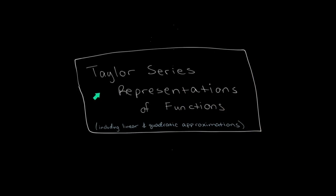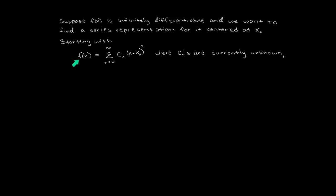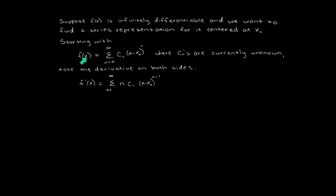The main topic for this video is Taylor series representations of functions. We'll see that special cases of Taylor series give us linear and quadratic approximations. What we're going to do is start with a random function and a random series representation, where the coefficients cn are currently unknown. We're going to do a little computation to get a formula for the cn's for any function f of x. We start by taking the derivative on both sides of the equation.